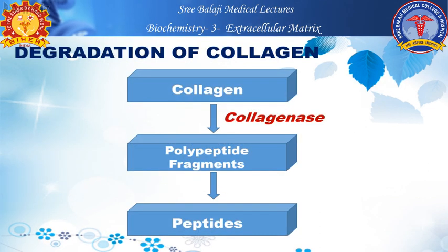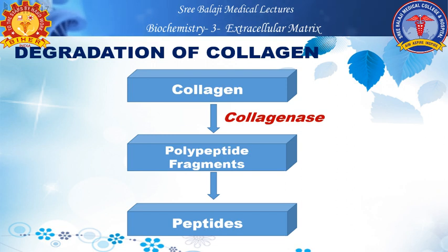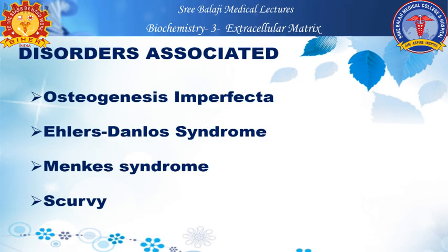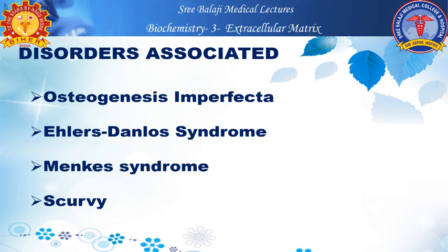Collagen is degraded by the enzyme collagenase. Collagenase is not very active normally because collagen must be maintained. It becomes active in conditions such as osteoporosis or cancer, degrading collagen into polypeptide fragments and then into peptides. Disorders associated with collagen include osteogenesis imperfecta, Ehlers-Danlos syndrome, Menkes syndrome, and scurvy. Menkes syndrome involves a defect in lysyl oxidase, which is a copper-containing enzyme. Scurvy is a deficiency of vitamin C, which is required for post-translational modification — specifically the hydroxylation of proline and lysine in collagen formation.